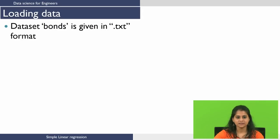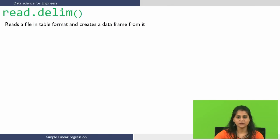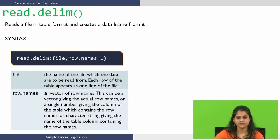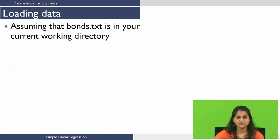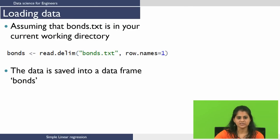Let us see how to load the data. You have been given the data set 'bonds' in text format — the extension of the file is .txt. To load the data from the file we use the function read.dlim, which reads a file in a table format and creates a data frame out of it. The input arguments to the function are 'file' and 'row.names'. File is the name of the file from which you want to read the data, and row.names are essentially the row IDs. Assuming the data is in your current working directory, the command reads as: read.dlim('bonds.txt', row.names=1). Once the command is executed, an object 'bonds' is created which is a data frame.